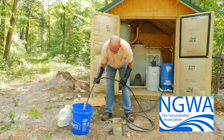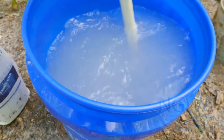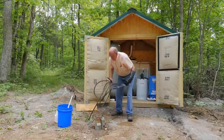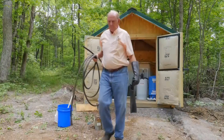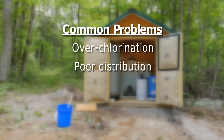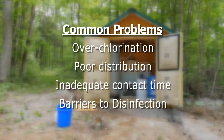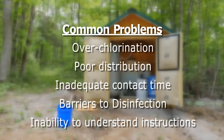The potential is great for well owners to not properly disinfect their well systems or even cause damage to their well systems or personal injury. Common problems with well owners attempting to chlorinate their own wells include over-chlorination and damage to well equipment, poor distribution of chlorine compound resulting in damage to casing, pipe, the pump and pump wire, inadequate contact time between the disinfectant and microorganisms in the well, failure to remove disinfection-inhibiting factors from the well thus impeding the disinfection effectiveness, and inability to understand or follow proper disinfection instructions.